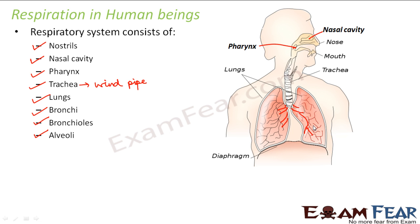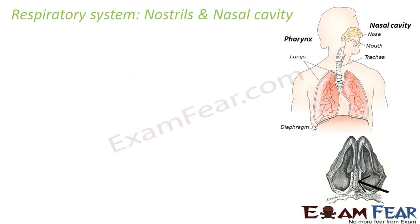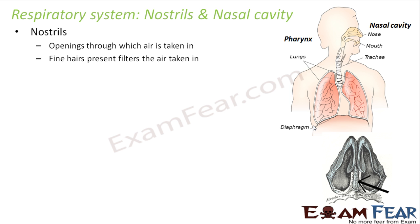Now we will discuss each part in detail. Starting with the nostrils: these are openings through which air is taken in. Inside our nostrils we have very small fine hairs. When air is taken in, if there are any dust particles, those hairs prevent the dust particles from getting inside and block them. That is the function of the hairs present inside the nostrils.